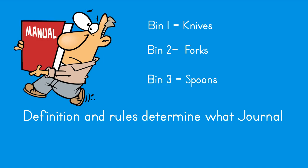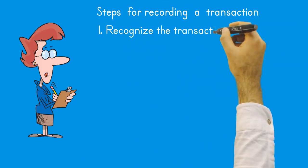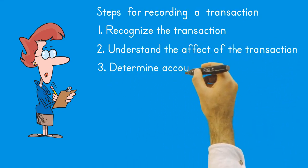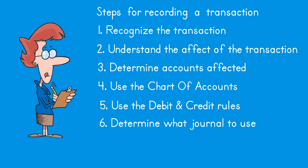The definition and rules of the special journal tell you in what journal a transaction should be recorded. The steps for analyzing and recording a transaction are: 1. Recognize a transaction has occurred and identify source documents. 2. Understand how it affects the business. 3. Determine what accounts are affected and whether the balance increases or decreases. 4. Use the chart of accounts to determine account numbers. 5. Use debit and credit rules to determine debits or credits. 6. Determine what journal to use. 7. Record the transaction.